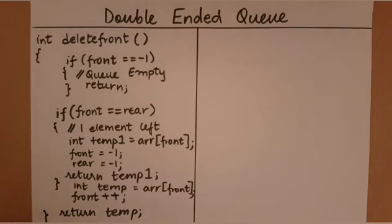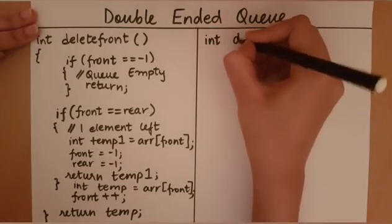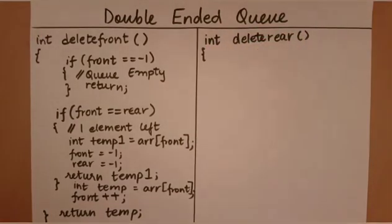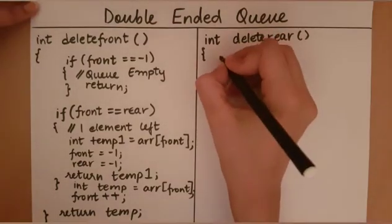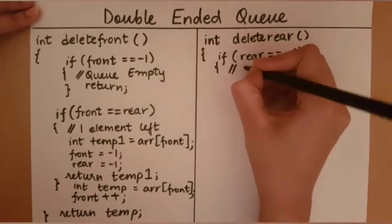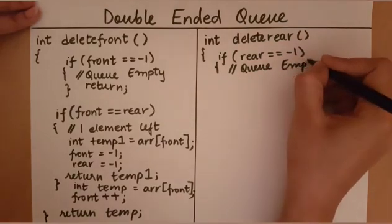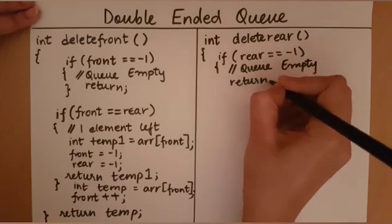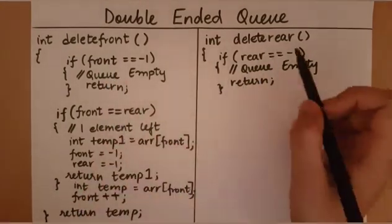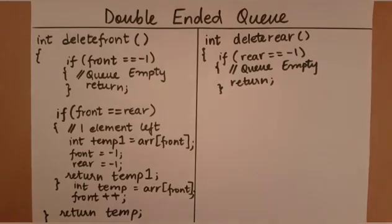Now let's take a look at deleting from the rear of a double-ended queue. Once again the first thing we must check is whether the queue is empty. You could give the check as front equal to minus one, or rear equal to minus one — they both return the same result. When the queue is empty we don't want to continue, so we return from the function.